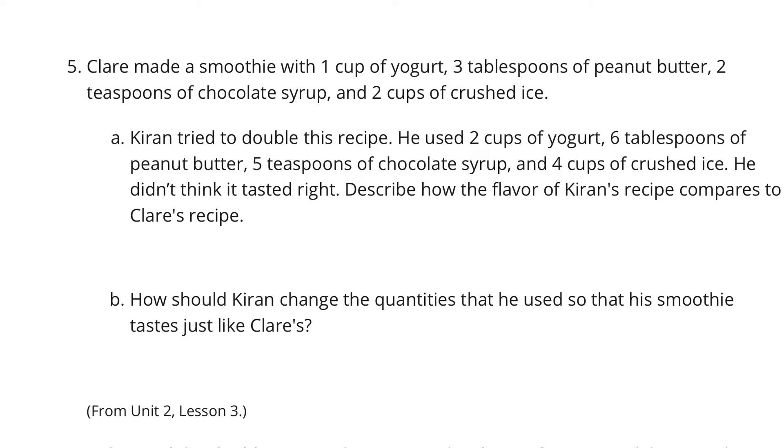Well, if we look at the yogurt. In Claire's, it was 1. In Kieran's, it was 2. So this was a double, so we're good with that one. If we look at the peanut butter, Claire had it at 3 tablespoons. Kieran had it at 6 tablespoons. Still multiplying by 2, so we're okay there.